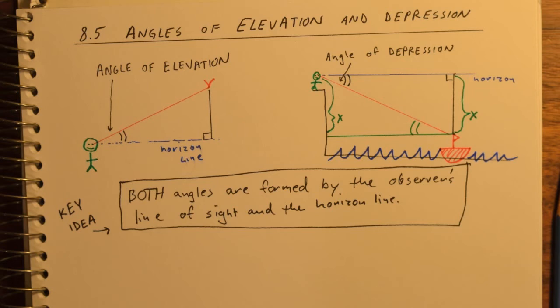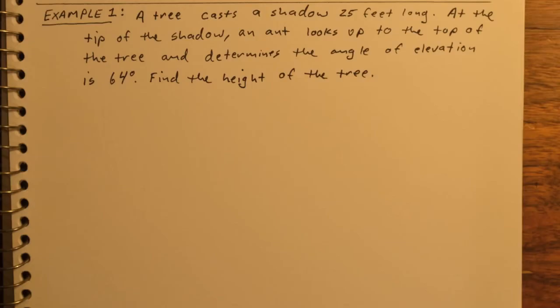Now let's take a look at a couple of examples. Example one: a tree casts a shadow 25 feet long. At the tip of the shadow, an ant looks up to the top of the tree and somehow determines that the angle of elevation is 64 degrees. Find the height of the tree.